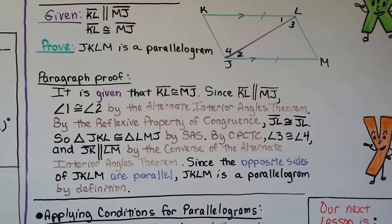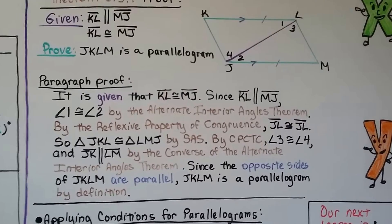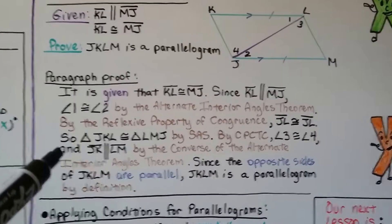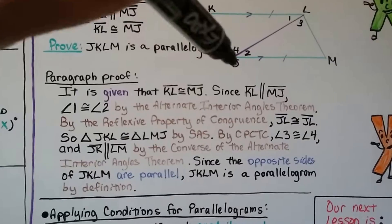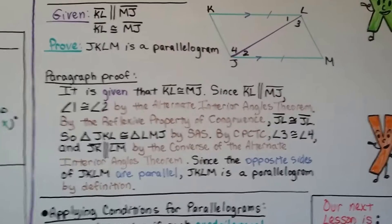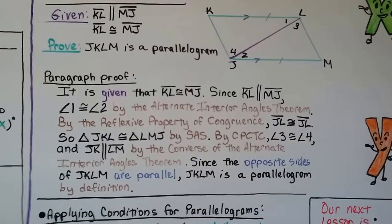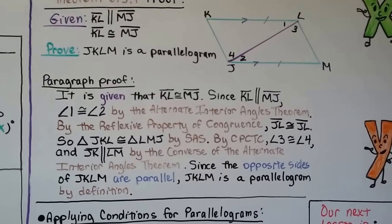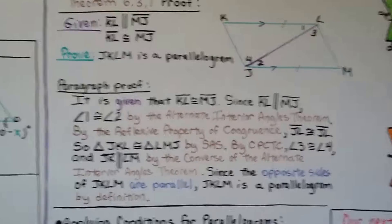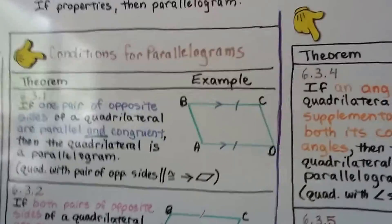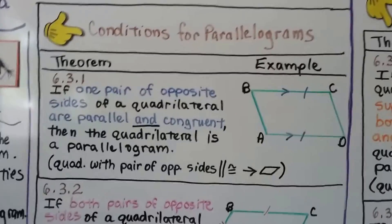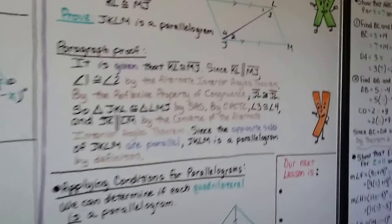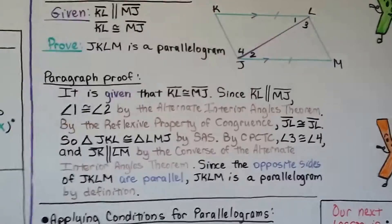By CPCTC — congruent parts of congruent triangles are congruent — angle 3 is congruent to angle 4. Therefore JK is parallel to LM by the converse of the alternate interior angles theorem. Since both pairs of opposite sides of JKLM are parallel, JKLM is a parallelogram by definition. This confirms theorem one: one pair of opposite sides parallel and congruent makes it a parallelogram.